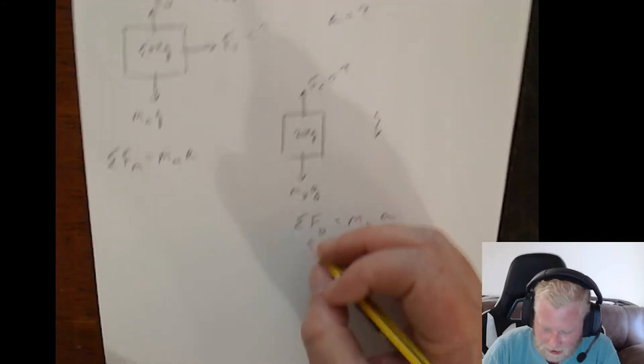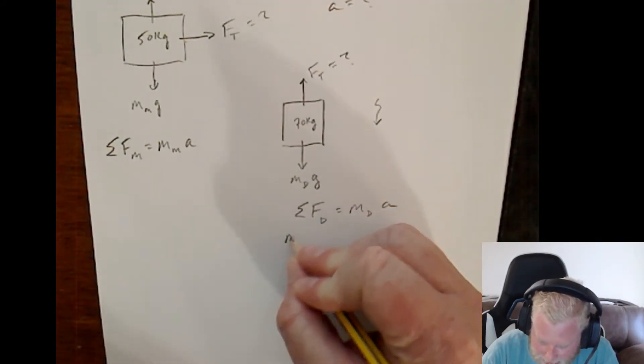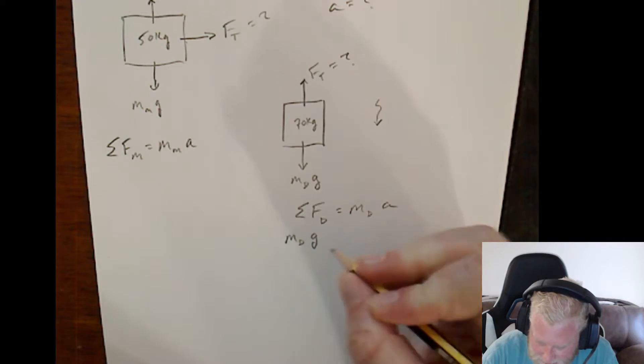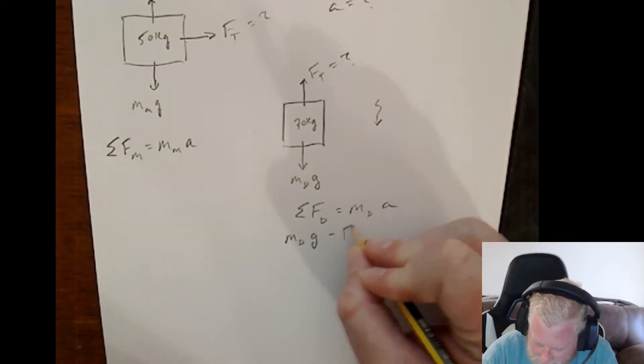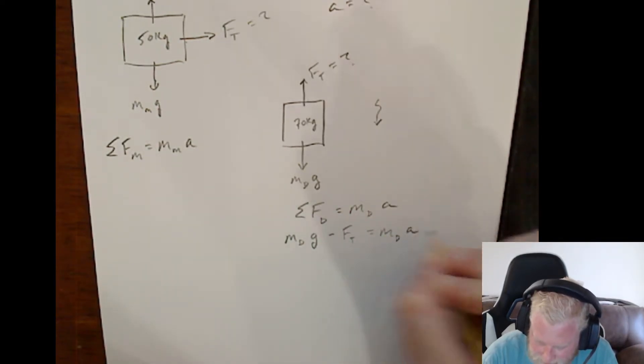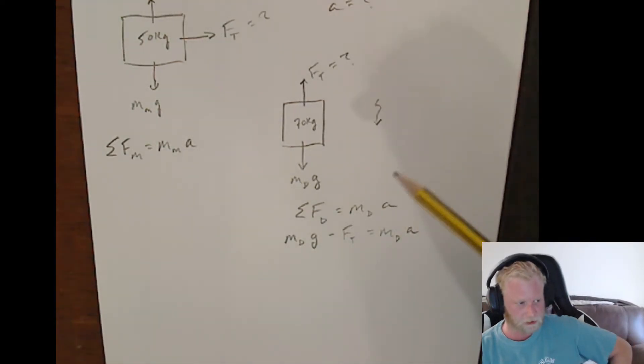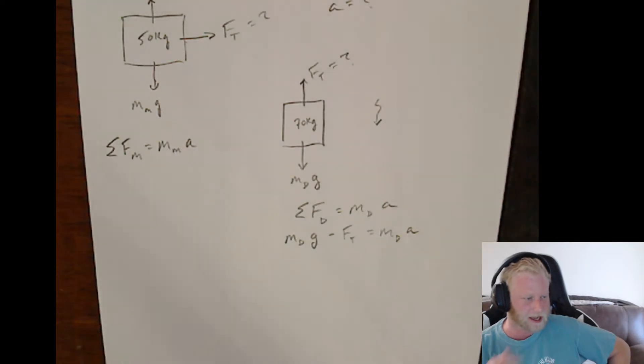And then you can work them out simultaneously until you can find a bridge between the two. So, for Don, we've got mass of Don times g minus tension equals mass of Don times a. Now, you'll notice here that I'm making downwards my positive direction. And the reason I'm doing that is just rule of thumb. Make whichever way they're moving your positive direction. That way you have to deal with a lot less negatives. It makes your life easier.